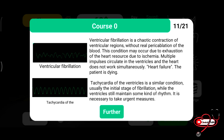On screen you can see two ECGs: the first is ventricular fibrillation and the second is ventricular tachycardia. Ventricular fibrillation is chaotic contractions of the ventricular regions without real pumping of blood. This may occur due to ischemia of the heart. In ventricular fibrillation, electrical activity is visible on the ECG but there is no pulse and no real ventricular contractions — multiple impulses circulate in the ventricles and the heart does not work simultaneously.